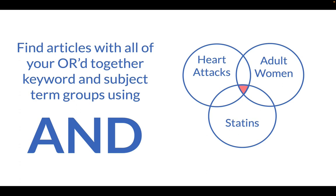As you can see, the middle area of this Venn diagram can get small quickly, especially if we were to add more concepts to our original research question, such as a comparison treatment other than statins. This is why we want to start out by making the pools of articles for each topic as large as possible using OR before we narrow in on specific articles using AND.